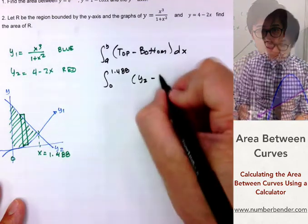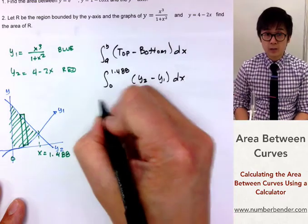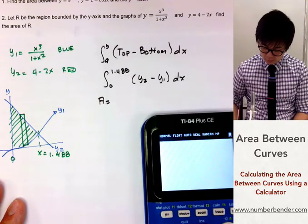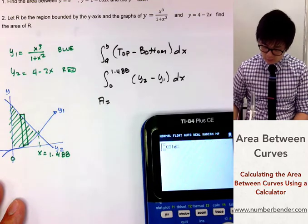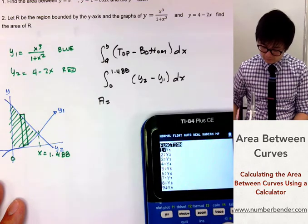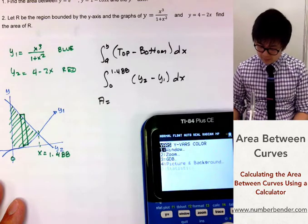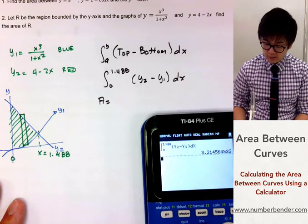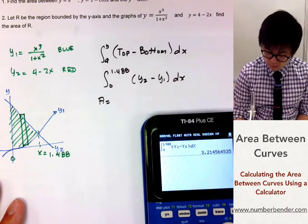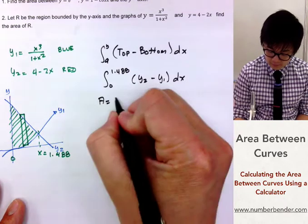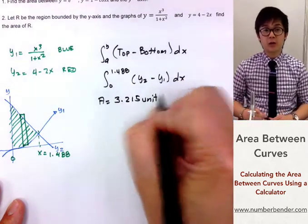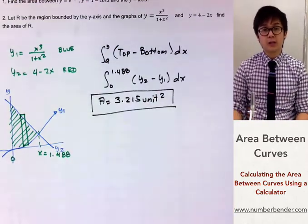So using our calculator: second, math 9, from 0 up until 1.488 of y sub 2 minus y sub 1 dx. And it's giving us 3.2145, let's round it up to the nearest thousandths: 3.215. And this is how we use our TI-84 in computing for the area between curves.